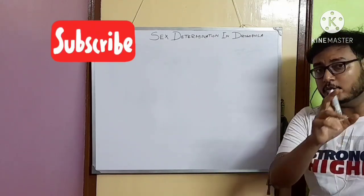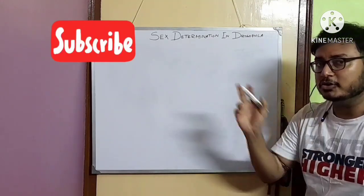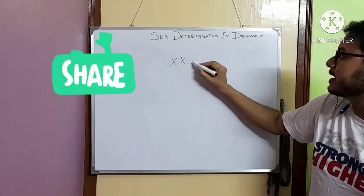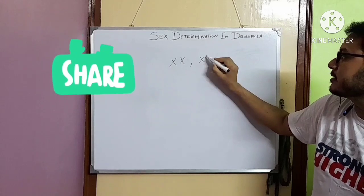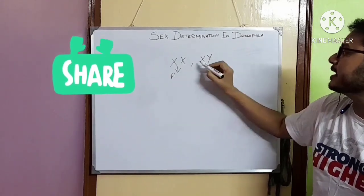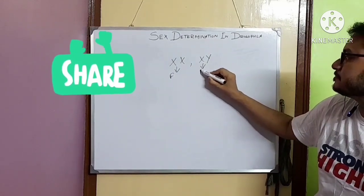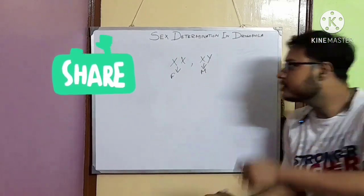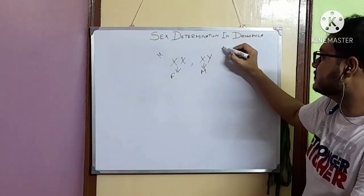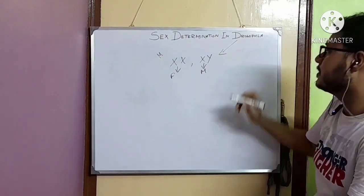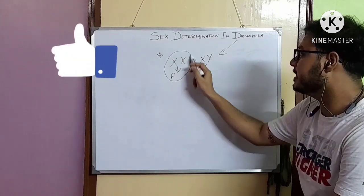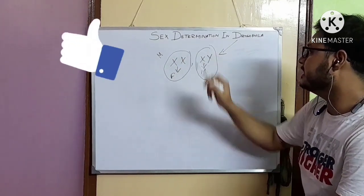Now in both mammals and in Drosophila, XX are females and XY are males, but they achieve this in female and male in very different ways.